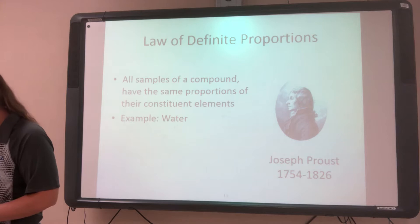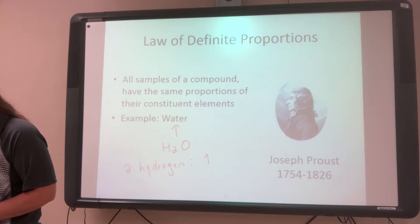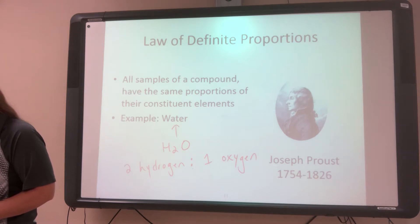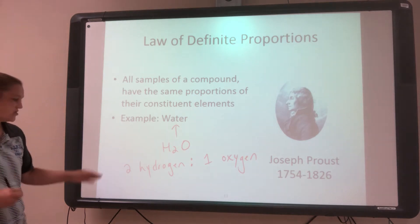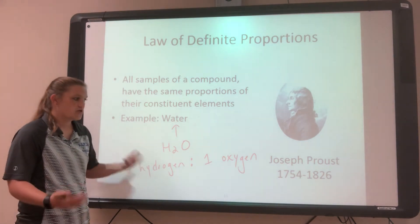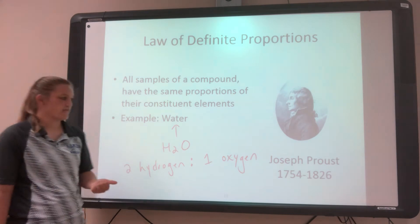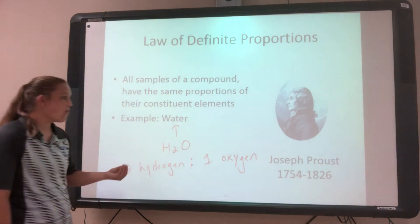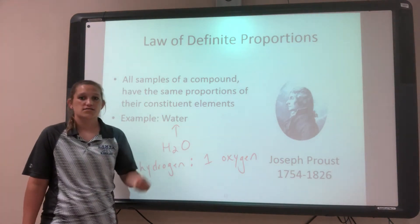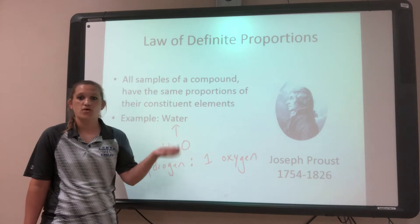For example, water — water is H₂O. This means there are two hydrogens to every one oxygen, every single time. The ratio is going to be the same every single time, a two-to-one ratio. There are two times as many hydrogens as oxygens, however you want to think about it. Every time you take a sample of water, you're always going to get that exact same two-to-one ratio, no matter how much water you have — a small sample or a large sample.